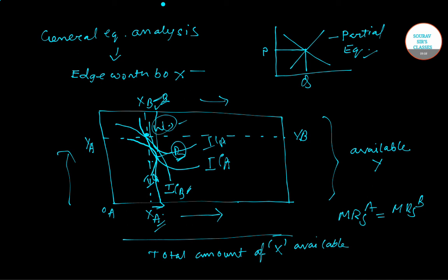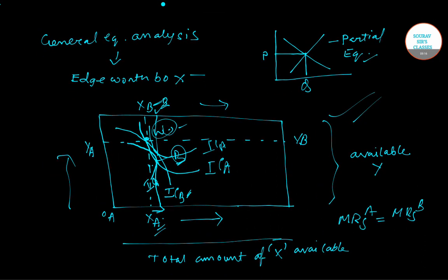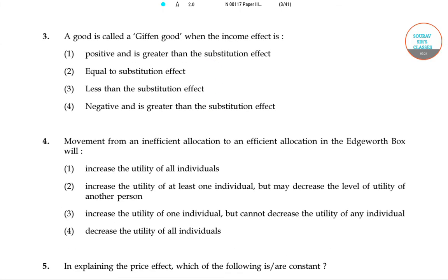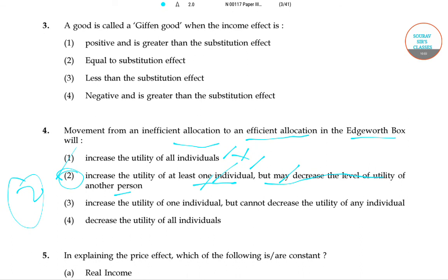If you want to know more about the Edgeworth Box, we'll make another separate video on it. For now, going back to the question: movement from an inefficient allocation to an efficient allocation in the Edgeworth Box. Option 1 — increase utility of all individuals — is not possible. Option 2 — increase utility of at least one individual but may decrease the utility of another — is correct, as we saw with the increase in B's utility. So the right answer for question number 4 is option 2, which is the condition for Pareto optimality.